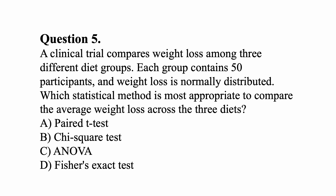Question five: A clinical trial compares weight loss among three different diet groups. Each group contains 50 participants, and weight loss is normally distributed. Which statistical method is most appropriate to compare the average weight loss across the three diets? We have three different diet groups with a continuous variable — weight loss. We would want to use ANOVA for the analysis because we have three different groups. So C, ANOVA, is the correct answer.